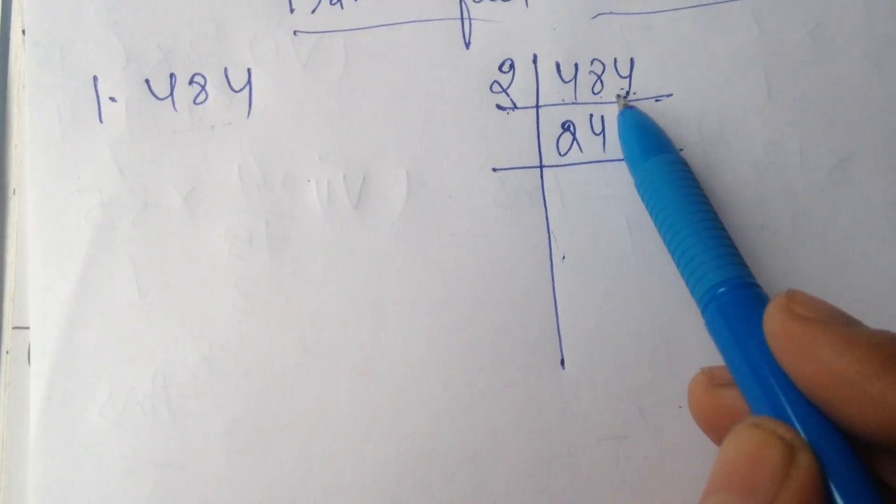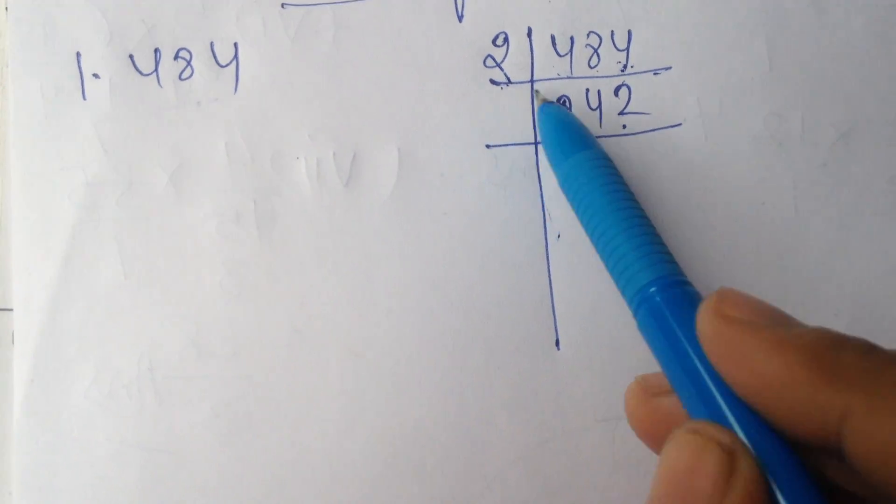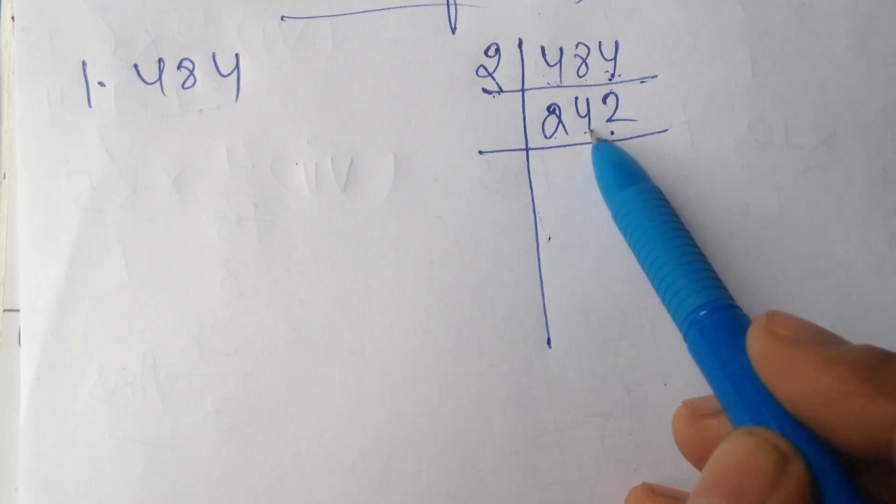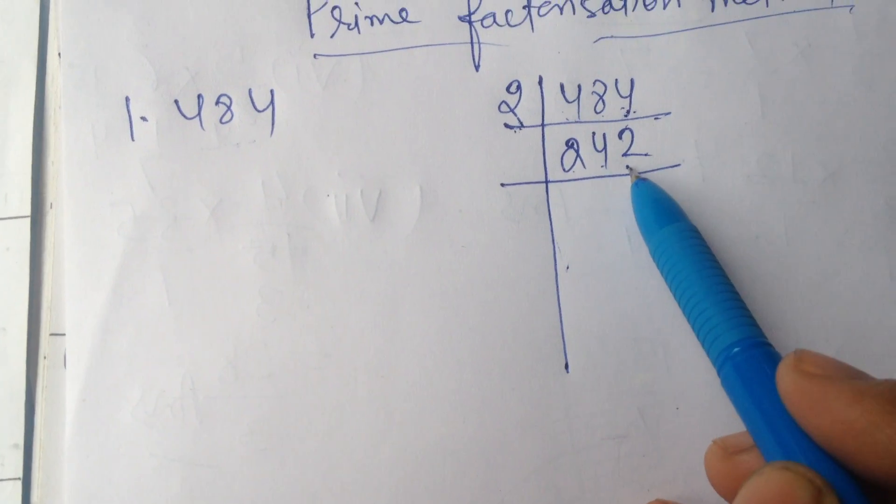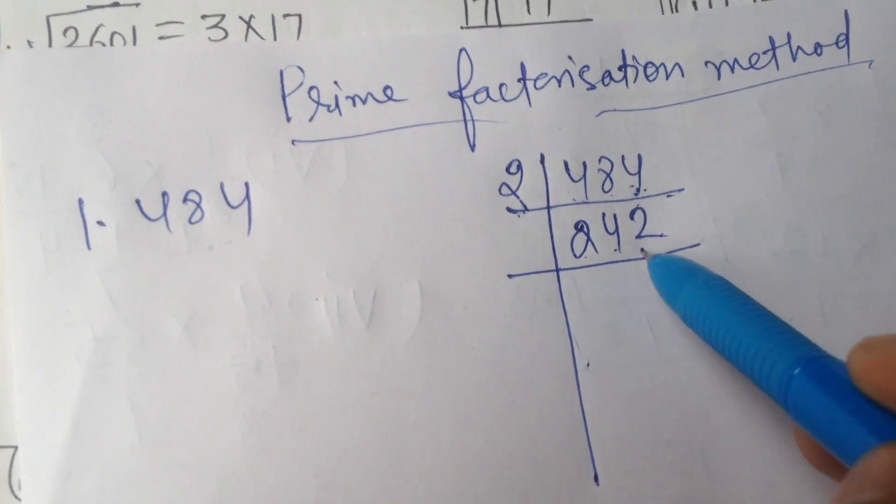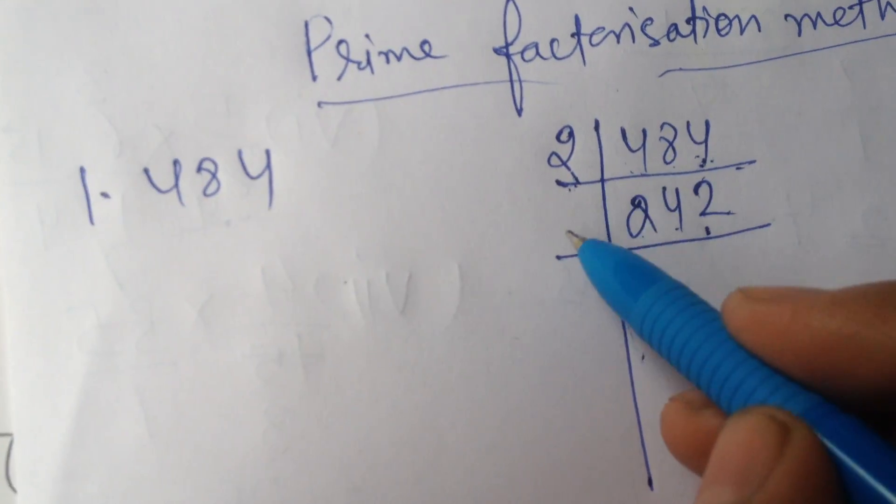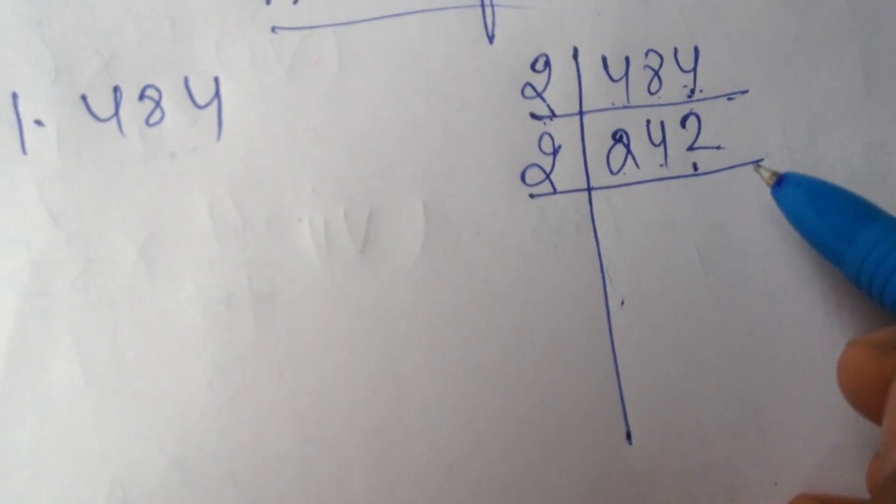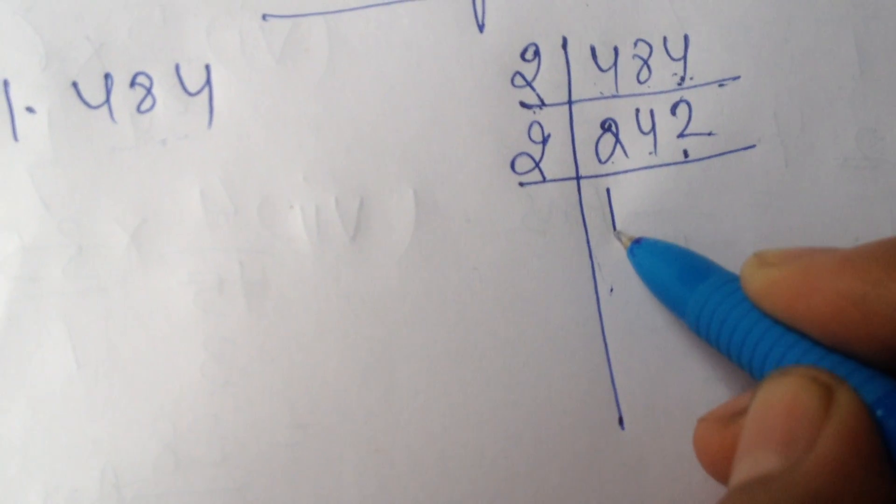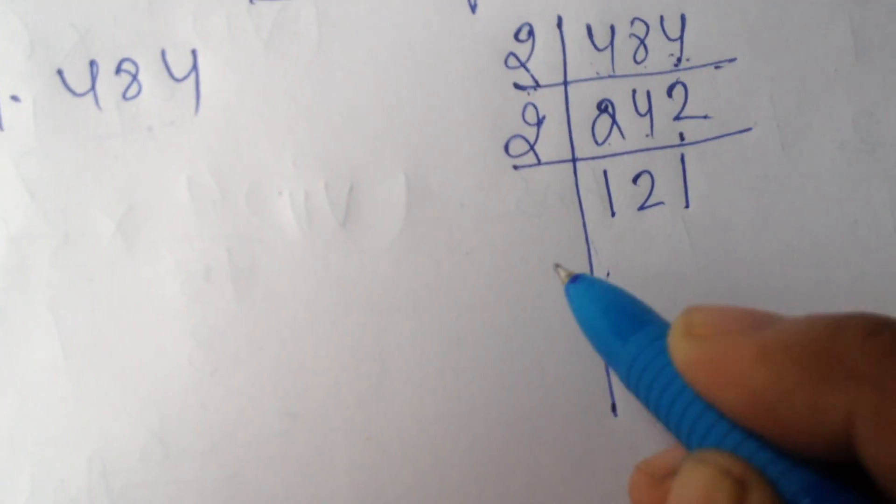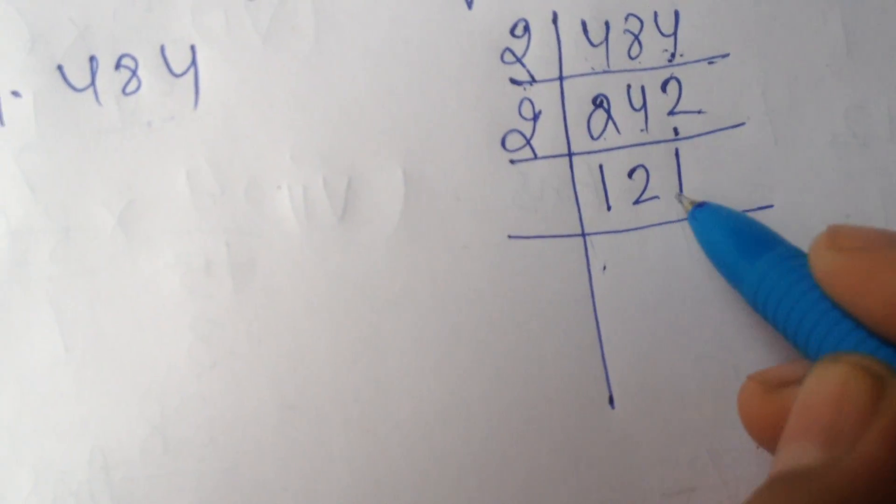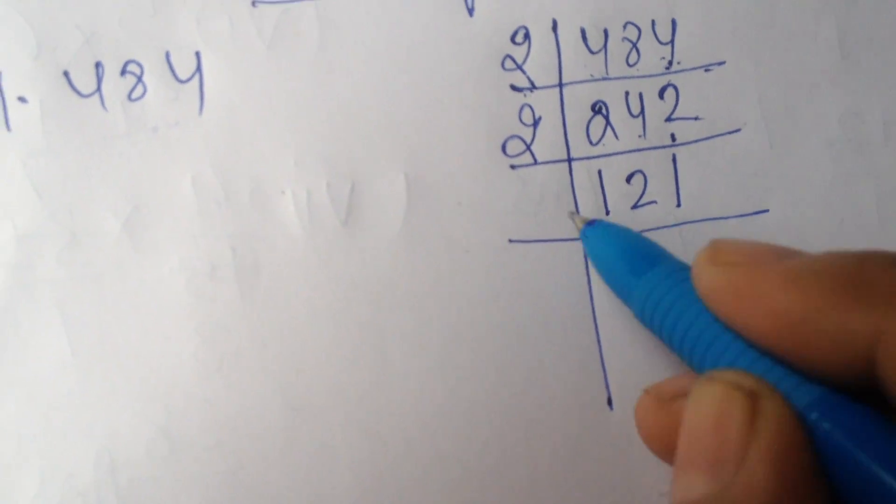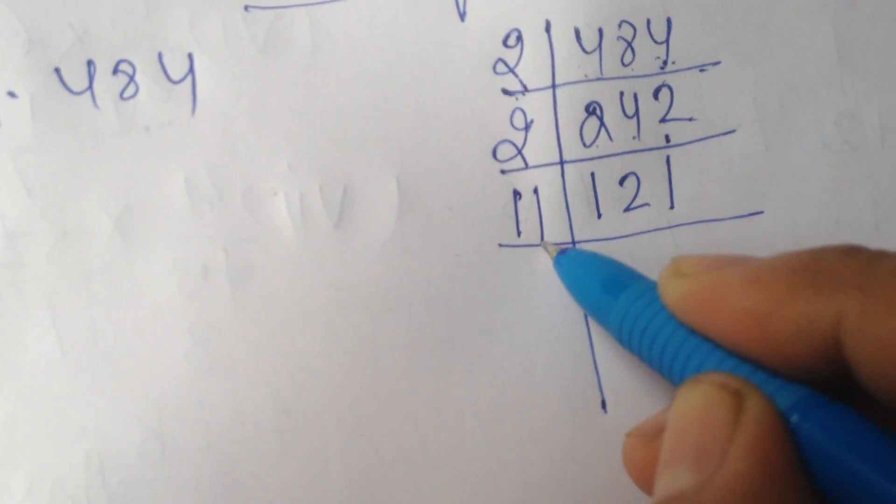484 ko rough work mein divide karke dekh lo. It will give us 242. Then again, last digit is 2. So divide by 2. It will give us 121. 121 is 11 ka square. We will divide this by 11. 11 ones are 11.